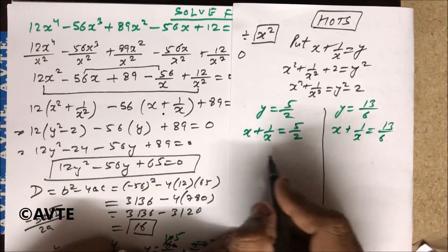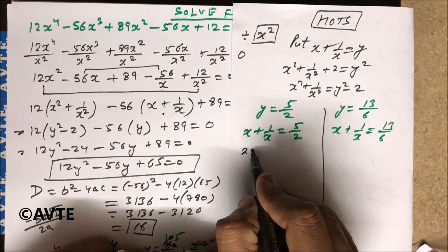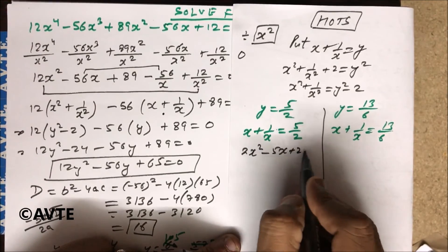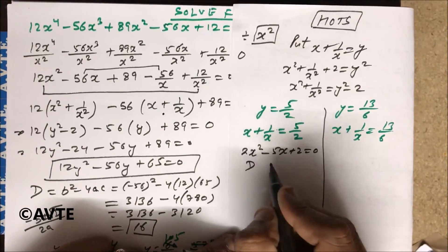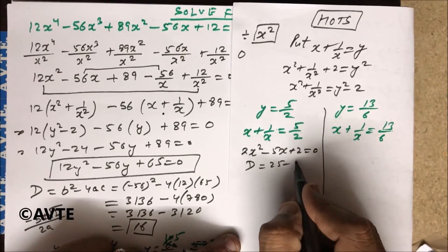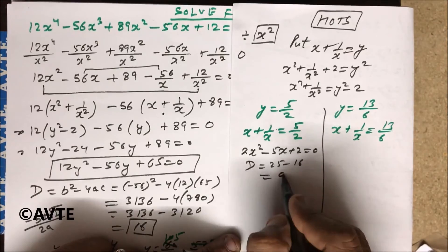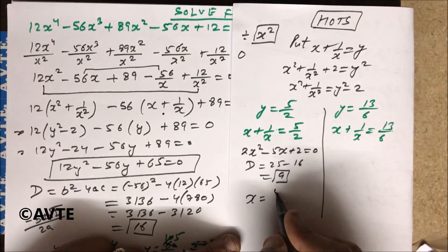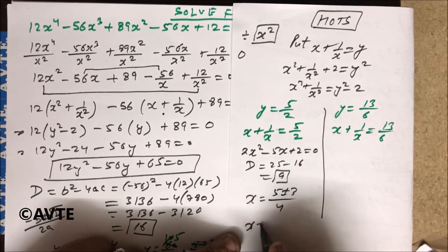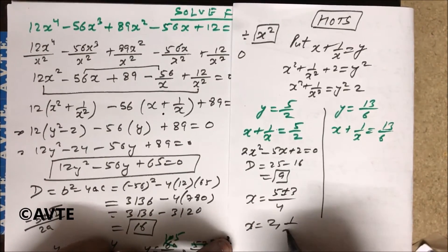So I'm a little fast. This is 2x² - 5x + 2. You make a quadratic and you can solve this by formula method. Your D is 25 - 16 = 9 and you can find x as (5 ± 3)/4. So your x is 2 and 1/2.